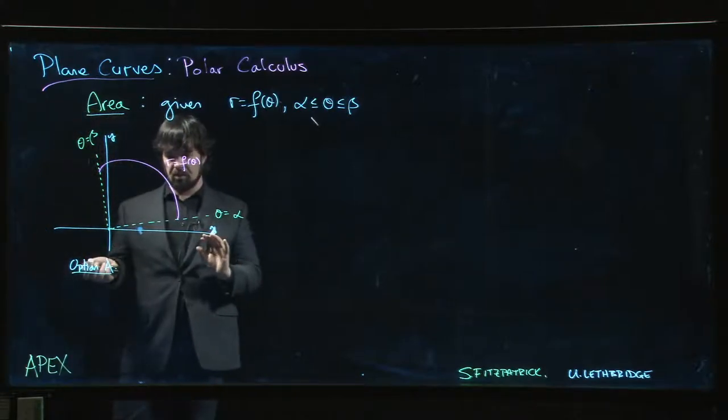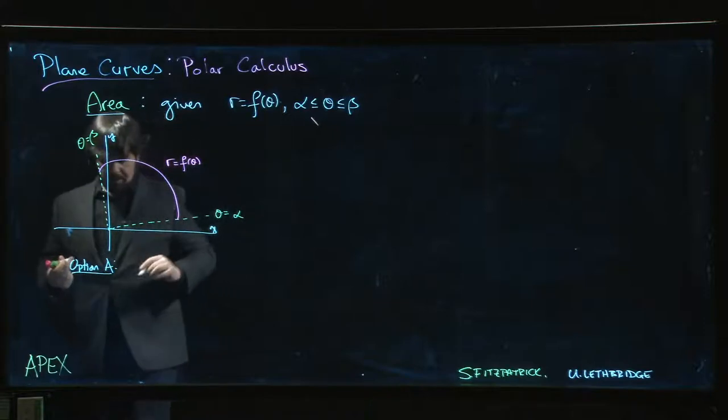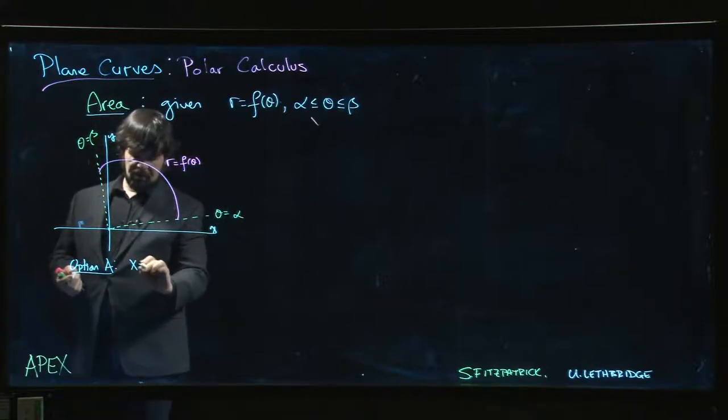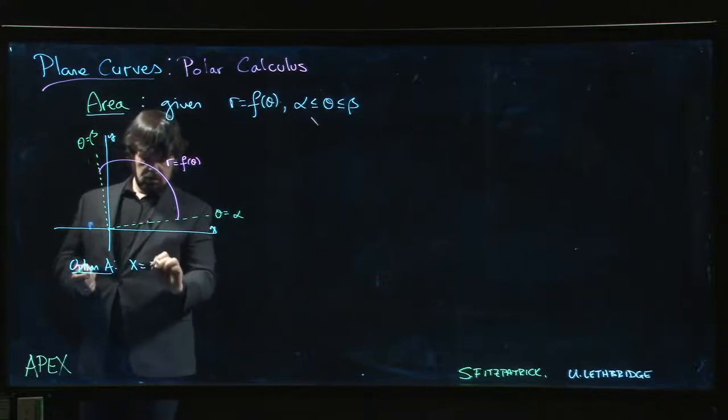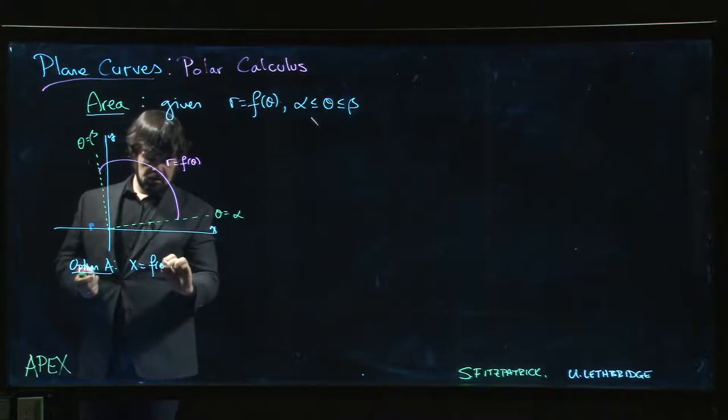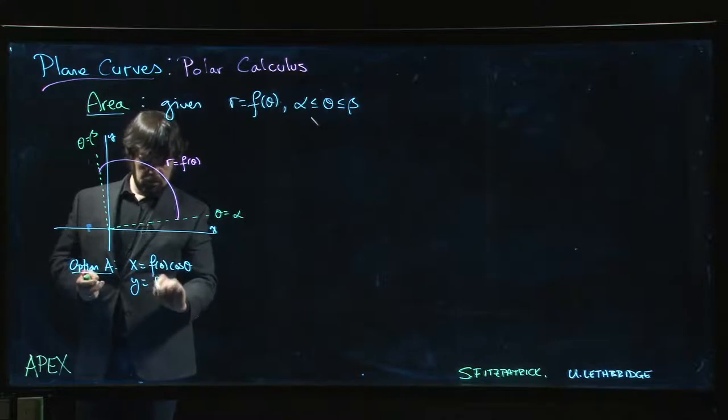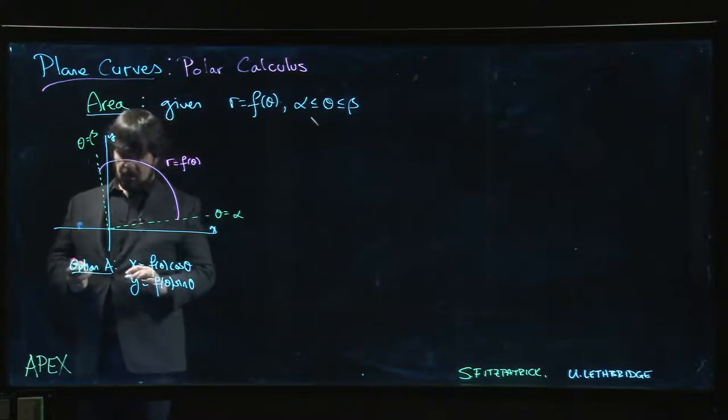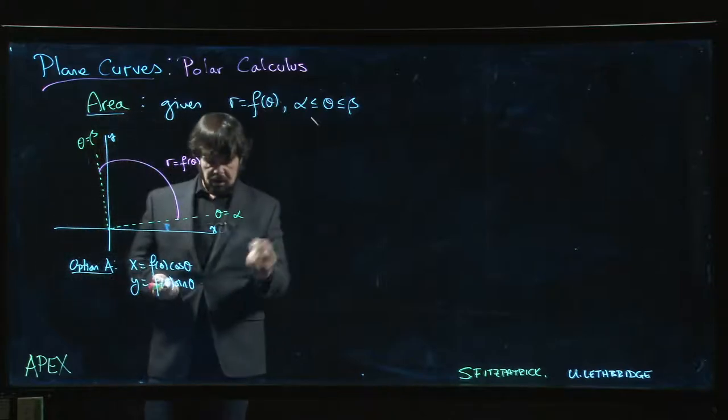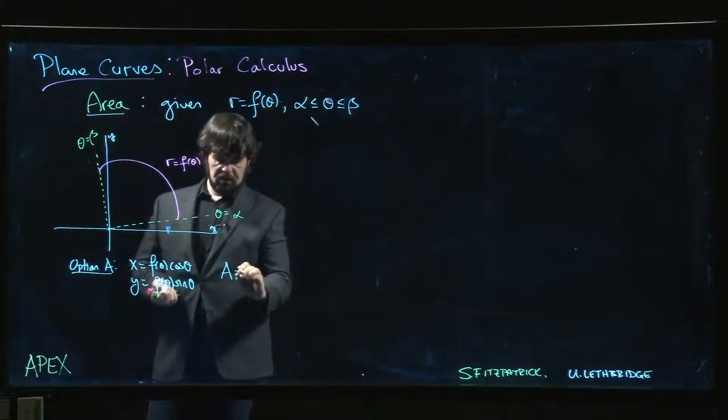We're not going to follow this up but I want to mention that it's a possibility and it's an interesting thing to think about. Option A is you say okay, well x equals f of theta cos theta, y equals f of theta sin theta, and our area is essentially the integral.